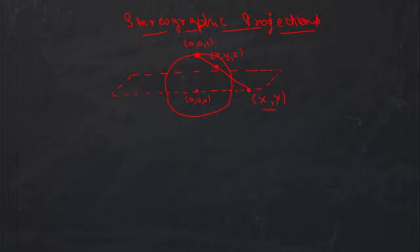We will not prove this, but we state the result: the points on the upper hemisphere and the points on the complex plane are in a one-to-one mapping — there is a bijection between them. Now, if I choose my point (x, y, z) to be exactly (0, 0, 1) itself, then we assume that extending the line from (0, 0, 1) to itself will cut the complex plane at infinity.